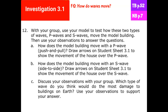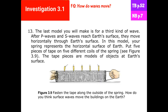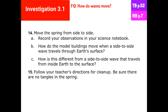For number 12, you're going to model the S and P waves — the push waves and the side to side waves — and write some things down on the sheet of paper you got today. The last model you'll make is the third kind of wave moving horizontally through the Earth. You're going to put five pieces of tape on the different coils, then move the spring side to side and record your observations.